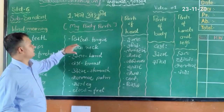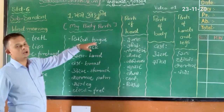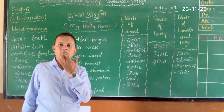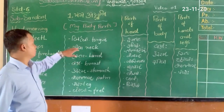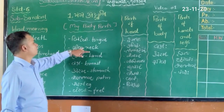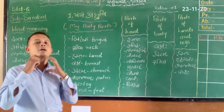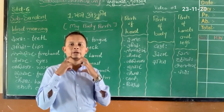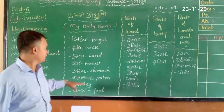Next is Jina. Jina means tongue — this is our Jina, it means our tongue. Now Griva — Griva means our neck.